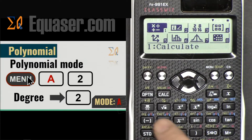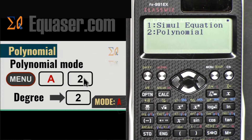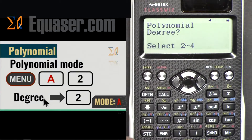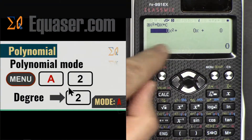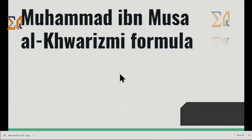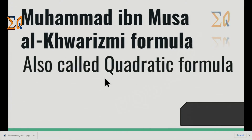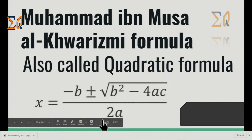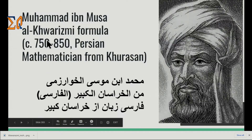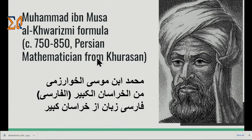In the menu select 2 for Polynomial, then select degree 2 to start with a second-degree polynomial. Muhammad ibn Musa al-Khwarizmi's formula is here to help us solve these second-degree polynomials, also called the quadratic formula. This formula is from Muhammad ibn Musa al-Khwarizmi, who was a Persian mathematician from Khurasan.